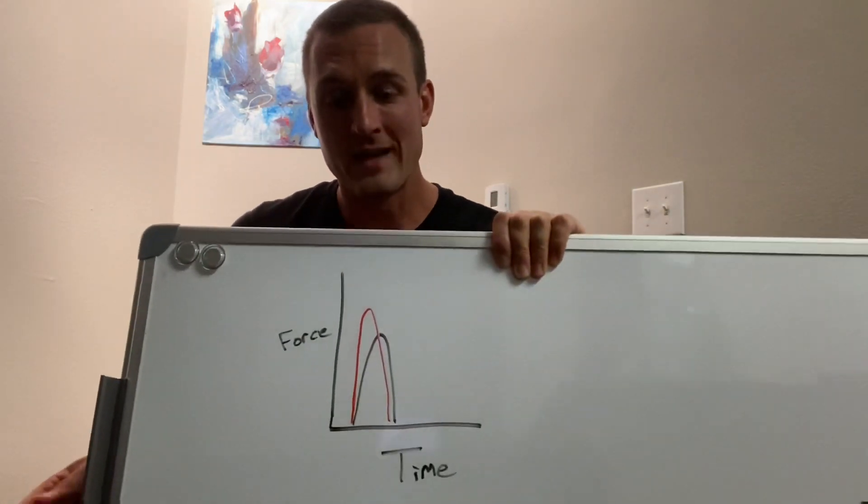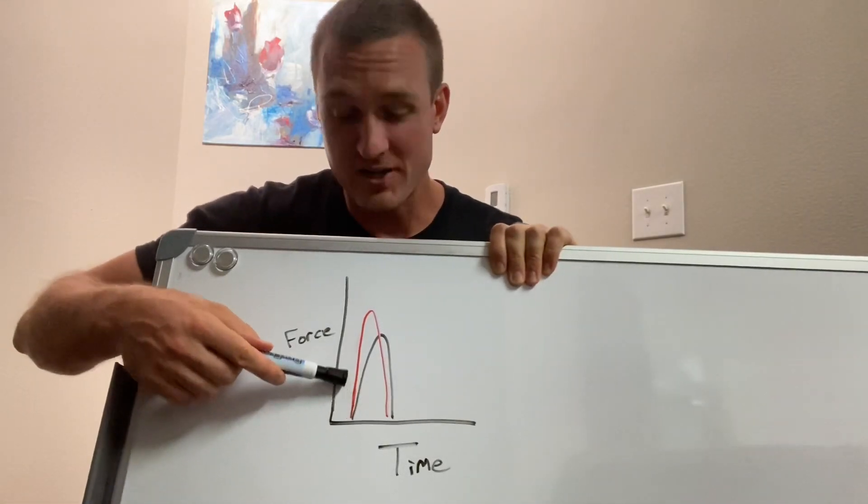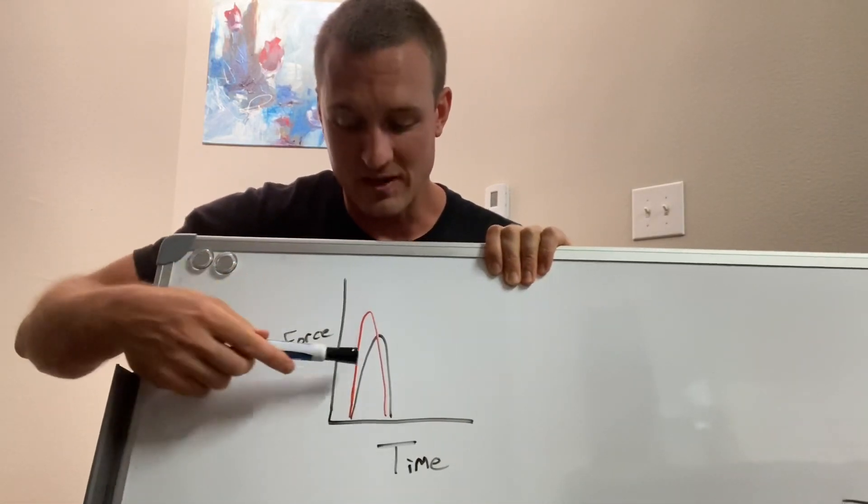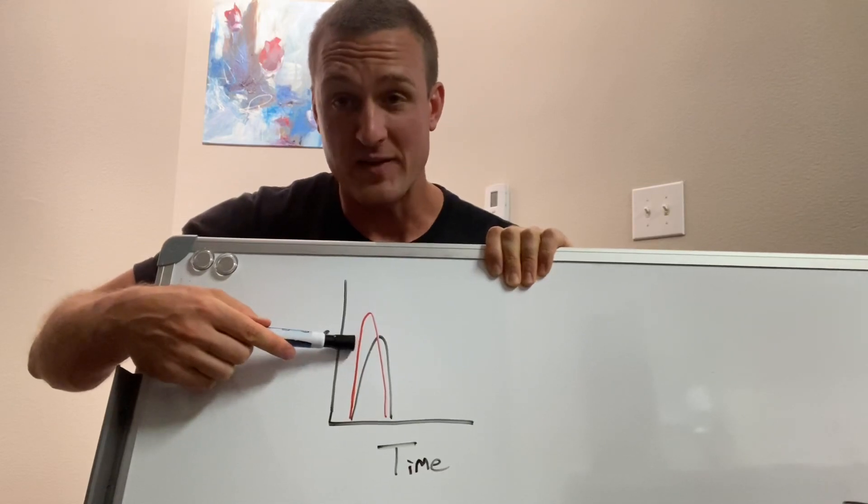And notice that I said improve, not just increase. So what we're looking for is something more like this red curve of force rather than the black curve. This red curve would be a much faster sprinter.